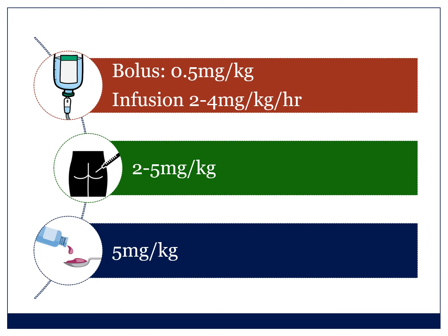For oral dosing, the range is five to ten milligrams per kilogram orally, but I usually give five milligrams per kilogram orally and then supplement it with other things.